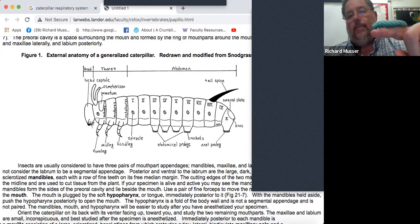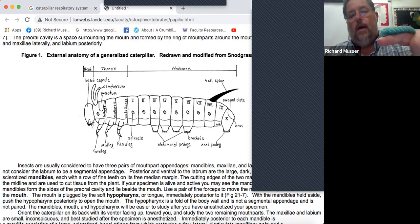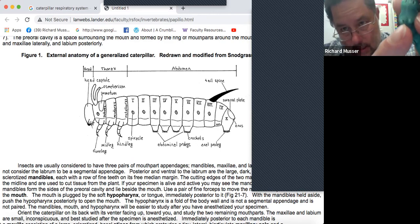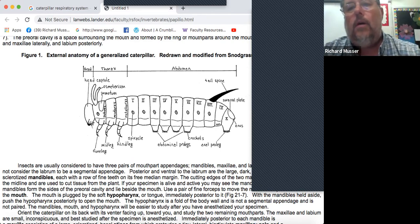Then there's about eight to ten segments for the anus or the abdominal segment. They're on the pro legs. There's crochets that help them to hold on. Then there's the anal pro legs down there. That's kind of the gist of what I wanted to get from the anatomy of the caterpillar.